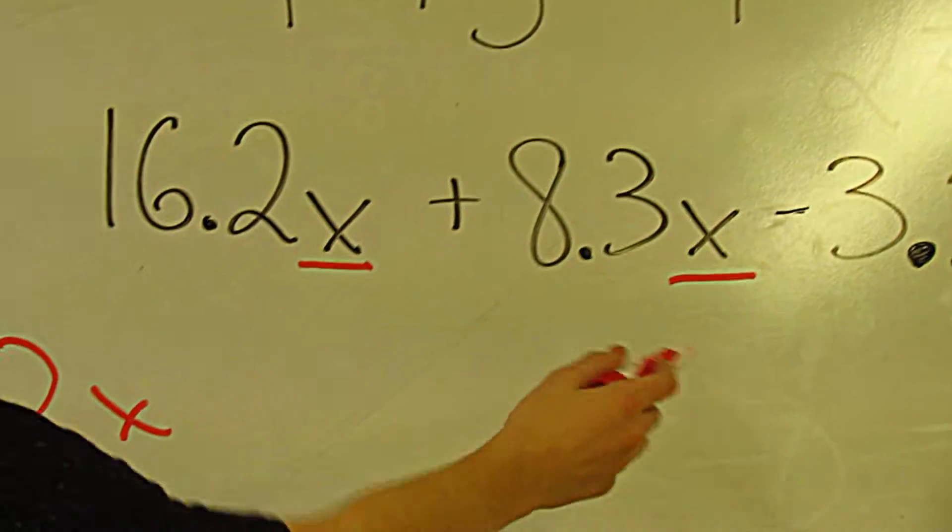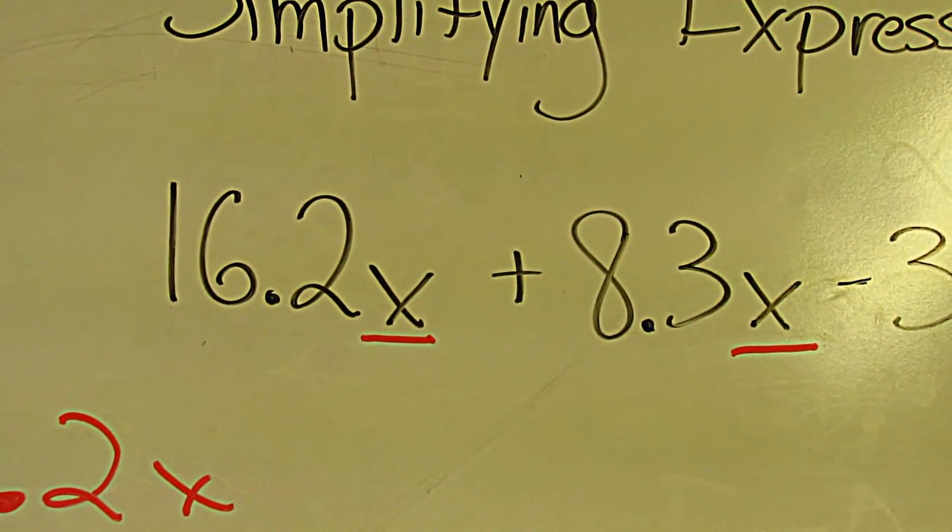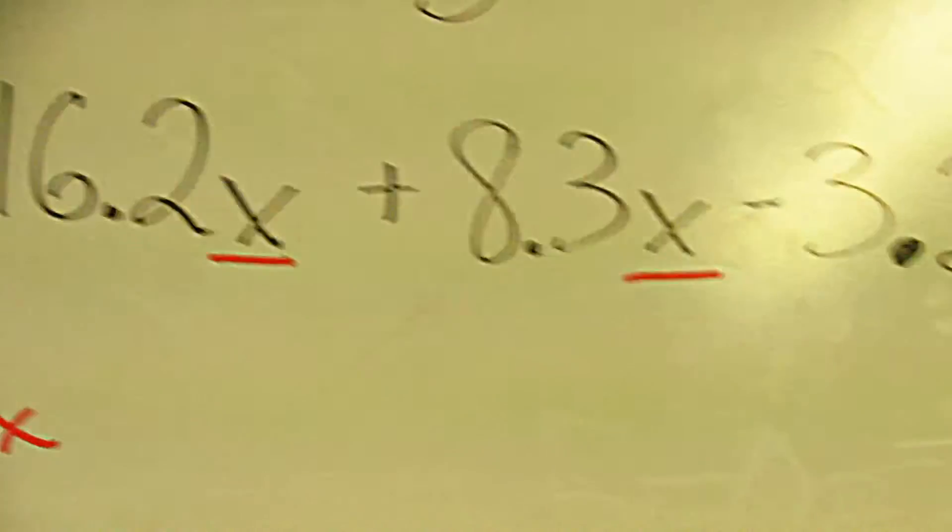The first thing to do is look where your x's are. So 16.2x plus 8.3x has x's.